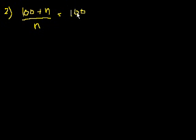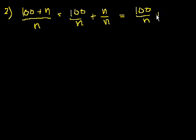For which of the following values of n is 100 plus n over n not an integer? We could simplify this. This is the same thing as 100 over n plus n over n, which is equal to 100 over n plus 1.